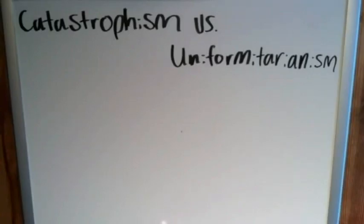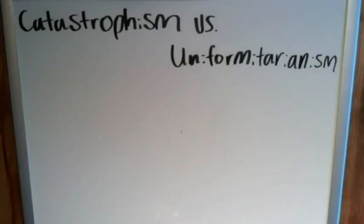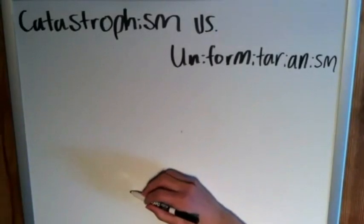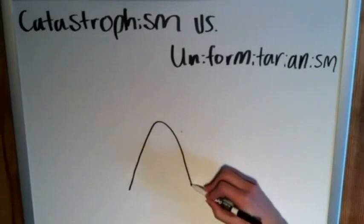Hey everyone, welcome back. Every once in a while it's good to take our minds off what's going on in the world and take a step back to think about how has this all come to be. This video is going to be about comparing two theories pertaining to how the world has worked leading up to today: catastrophism and uniformitarianism.